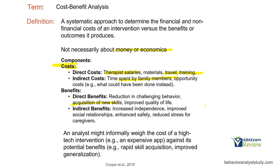Or let's say we're not really seeing a lot of progress, but we're paying a lot of money, training a lot, and spending a lot of time with family members. What can we change? How can we start to level this relationship out? Or consider an analyst who weighs the cost of a high-tech intervention — an expensive application to teach reading. If it costs $300 a month but all clients are showing rapid skill improvement, then maybe the cost is worth it because of the benefit.